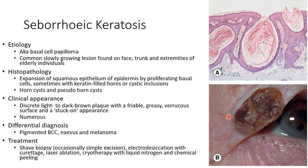Coming to the clinical appearance, patients present with discrete light to dark brown plaques with a friable greasy verrucous surface and a stuck-on appearance, as you can see in this picture. Usually there are numerous lesions. Coming to the differential diagnosis, we need to differentiate seborrheic keratosis from pigmented basal cell carcinoma, nevus, and melanoma.